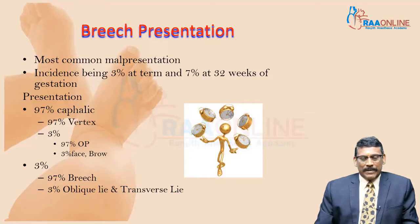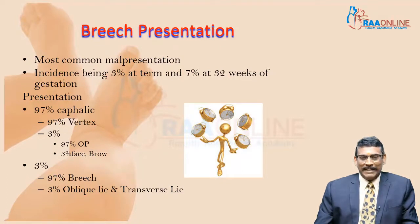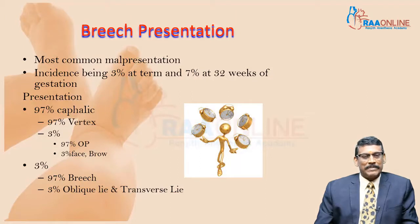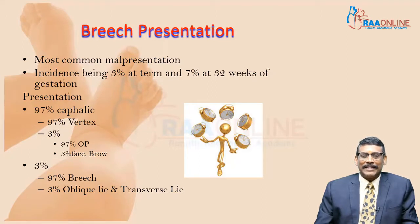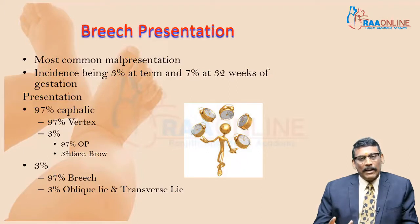For easy remembrance, presentations can be 97% cephalic and 3% others. Of the 97% cephalic, again divide them: 97% would be vertex and 3% would be occipito-posterior, face, and brow. The remaining 3% non-cephalic: 97% being breech and 3% being oblique or transverse lie. Keep the rule of 97-3 in mind always.